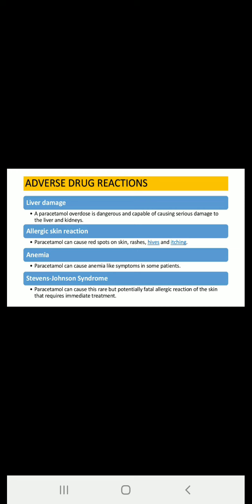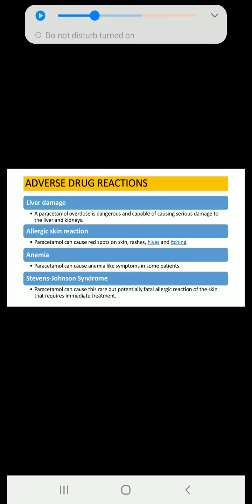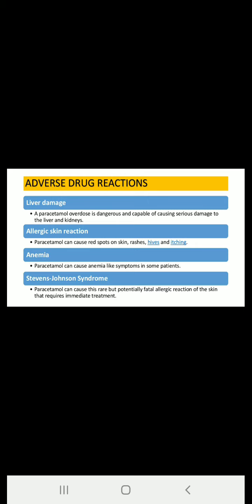The next adverse drug reaction is Stevens-Johnson syndrome. This is a rare, serious disorder of the skin and mucous membrane — specifically a skin disorder and a medical emergency, often a reaction to medication or an infection. Flu-like symptoms appear first, followed by painful rashes that spread and cause blisters. Paracetamol can cause this rare but potentially fatal allergic reaction of the skin that requires immediate treatment.